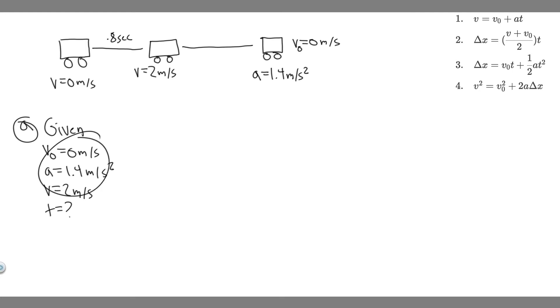So how do we find t given these variables? We're going to use one of the kinematic equations. If you look, 2 through 4 all contain delta x, so we're not going to use those. But if you look at the top one, v equals v sub 0 plus a times t. Notice how we have v, we have v sub 0, and we have a, so we can solve for the time it takes.